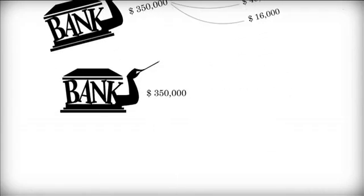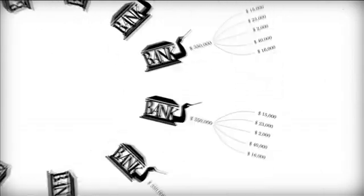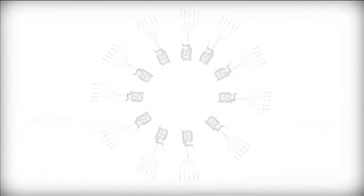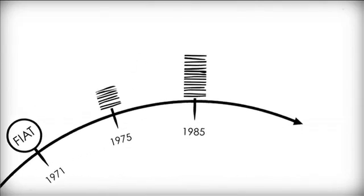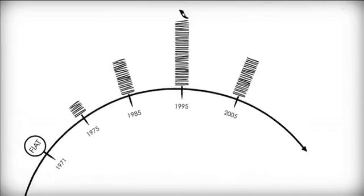Over the last 40 years, since this fiat system of money became the global norm, the supply of money has grown exponentially. In fact, we've seen the greatest growth in the supply of money in history. But who benefits? Of course, those that have the power to issue money, governments and banks.